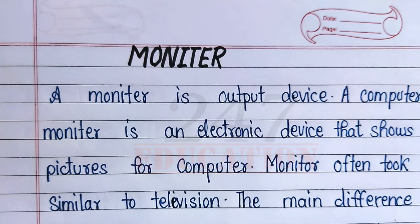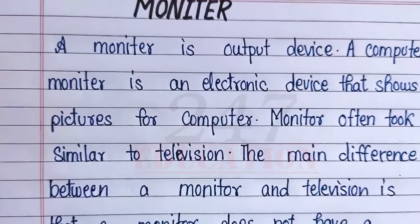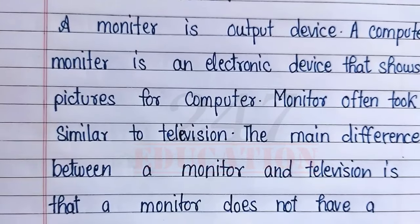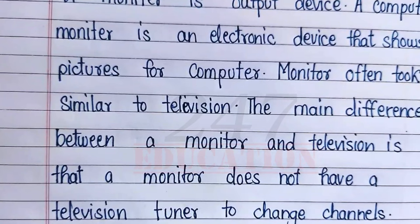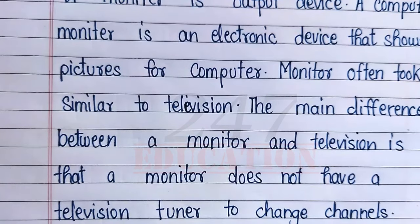A monitor is an output device. A computer monitor is an electronic device that shows pictures for a computer. Monitor often looks similar to television. The main difference between a monitor and television is that a monitor does not have a television turner to change channels. Thank you.